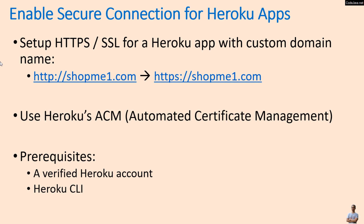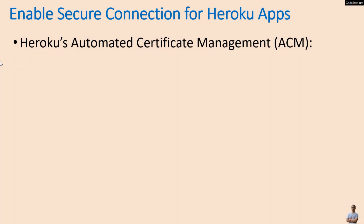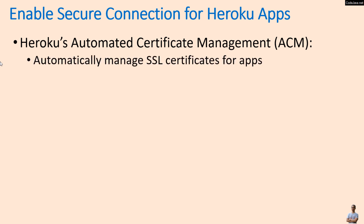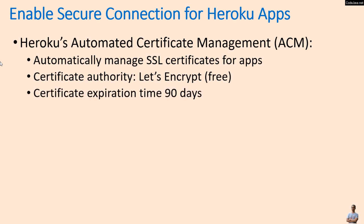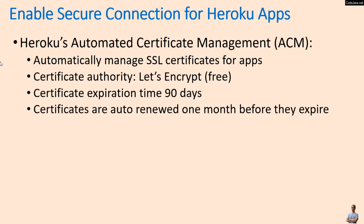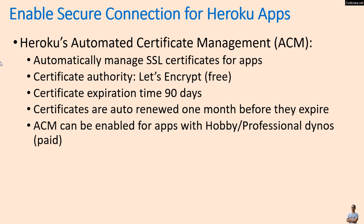Heroku Automated Certificate Management or ACM automatically manages SSL certificates for apps. The certificate authority is Let's Encrypt, which is a free and open certificate authority. Certificate expiration time is 90 days or three months, and certificates automatically renew one month before they expire. Note that ACM can be enabled only for apps with hobby or professional dynos — in other words, you have to pay to use secure connection.